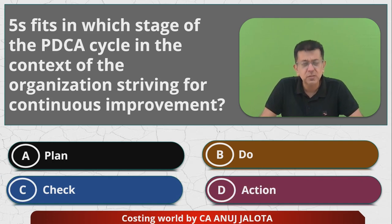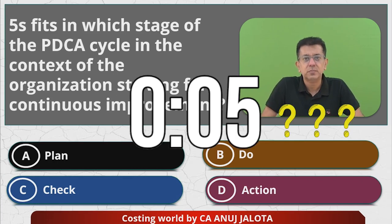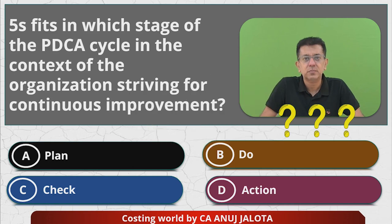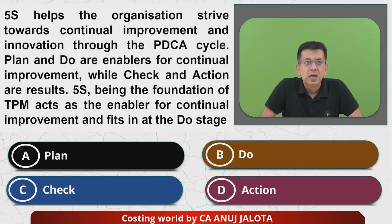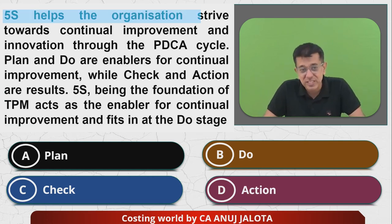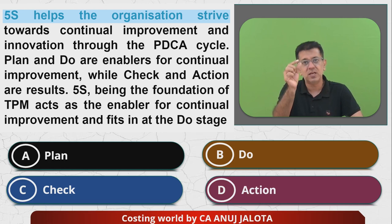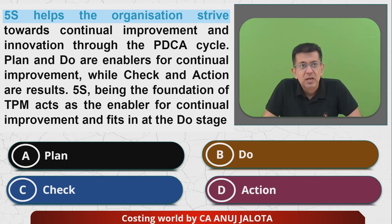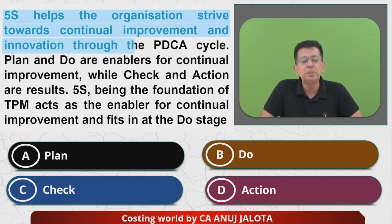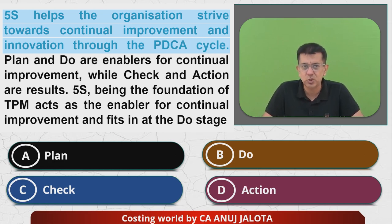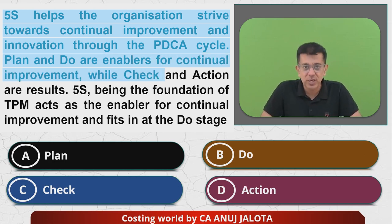If you know the answer, this is the time to comment. Here is an extract from your module which I thought would be useful. 5S helps the organization strive towards continuous improvement and innovation through the PDCA cycle — Plan, Do, Check, Action. Plan and Do are enablers for continuous improvement, while Check and Action are the results.